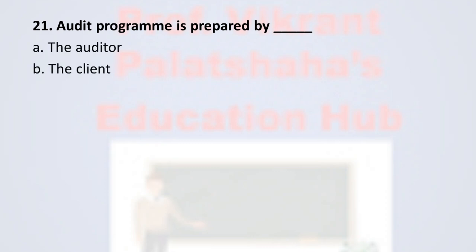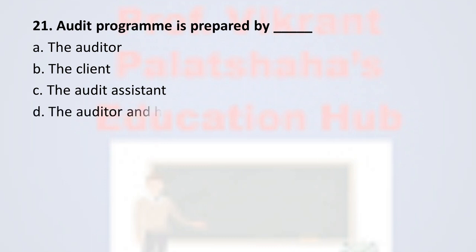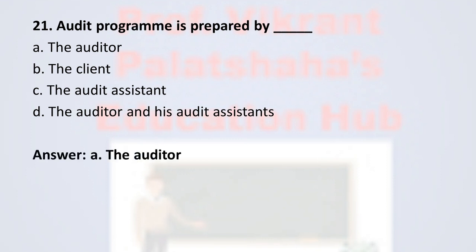Question number twenty-one: audit program is prepared by — option A the auditor, option B the client, option C the audit assistant, and option D the auditor and his audit assistants. The correct option is option A, the auditor.